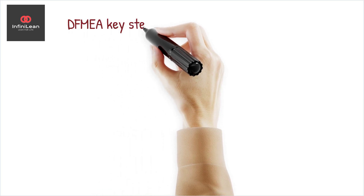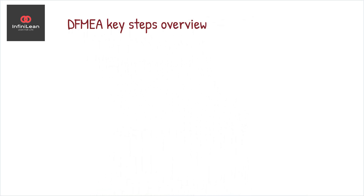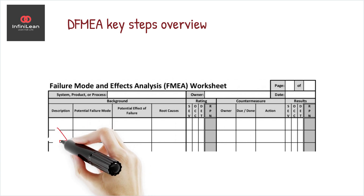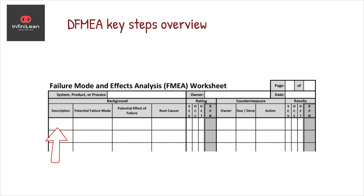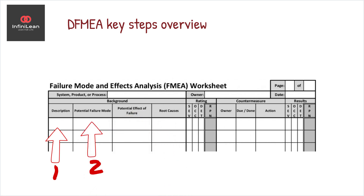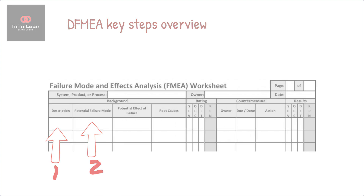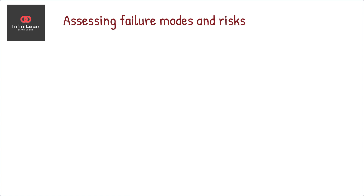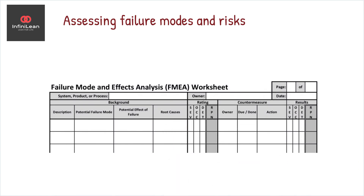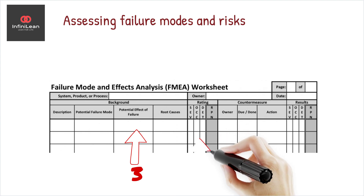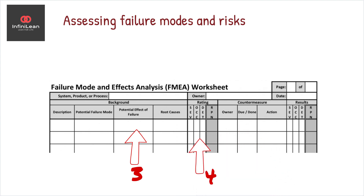The DFMEA process involves several key steps. It begins with a clear description of the product or process being analyzed. Then, potential failure modes are listed — these are ways in which a product might fail to perform its intended function. Each failure mode is examined for its possible effects, which are rated based on severity, frequency, and ease of detection. This generates a risk priority number, or RPN, which helps teams identify and act on critical risks.